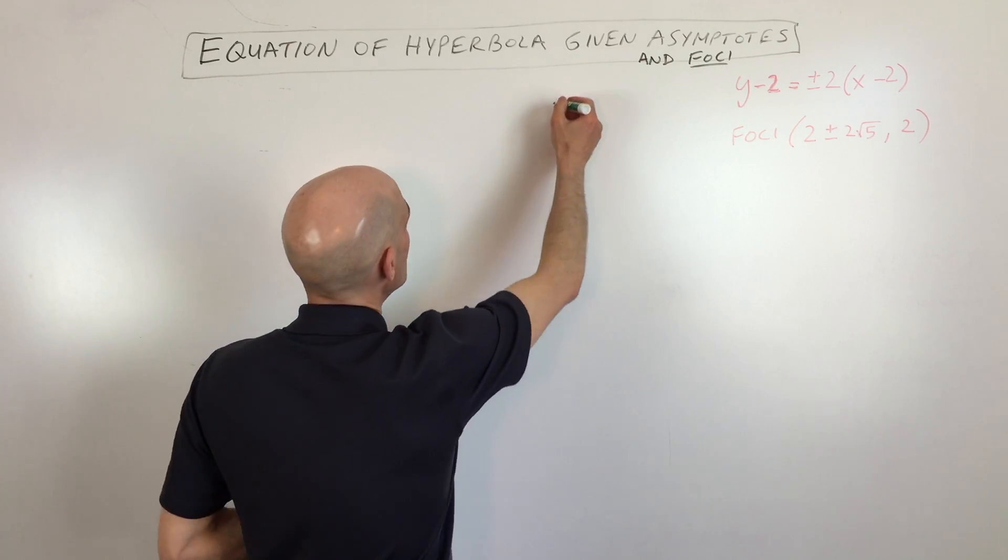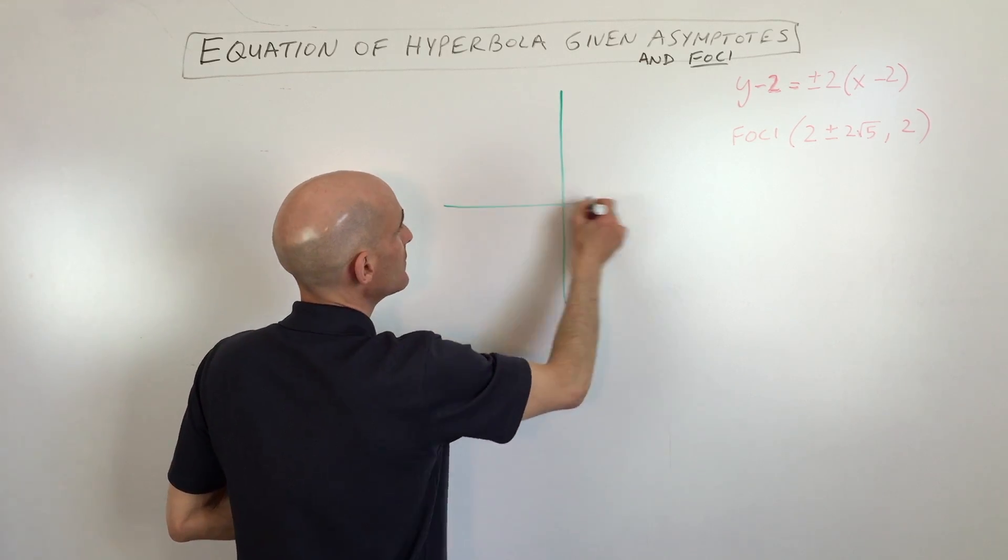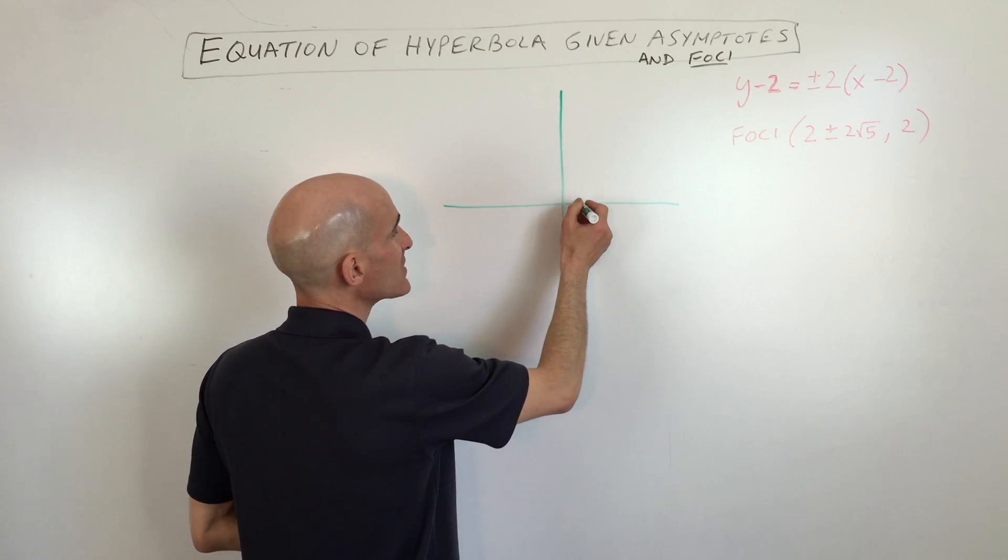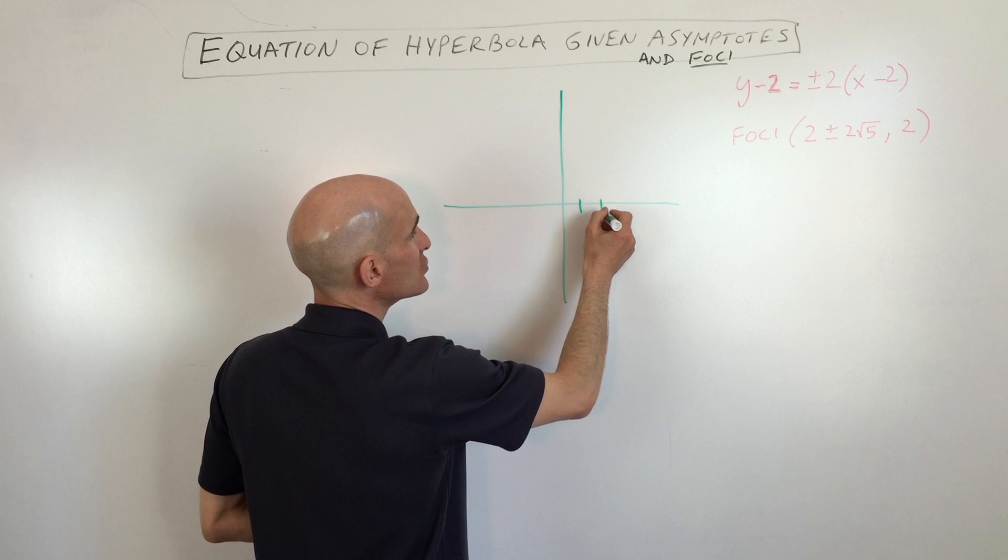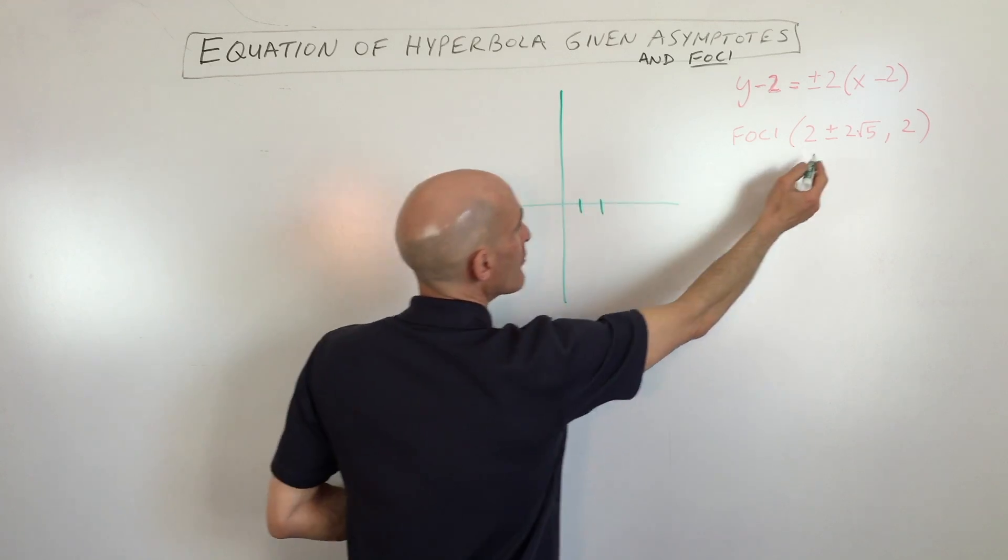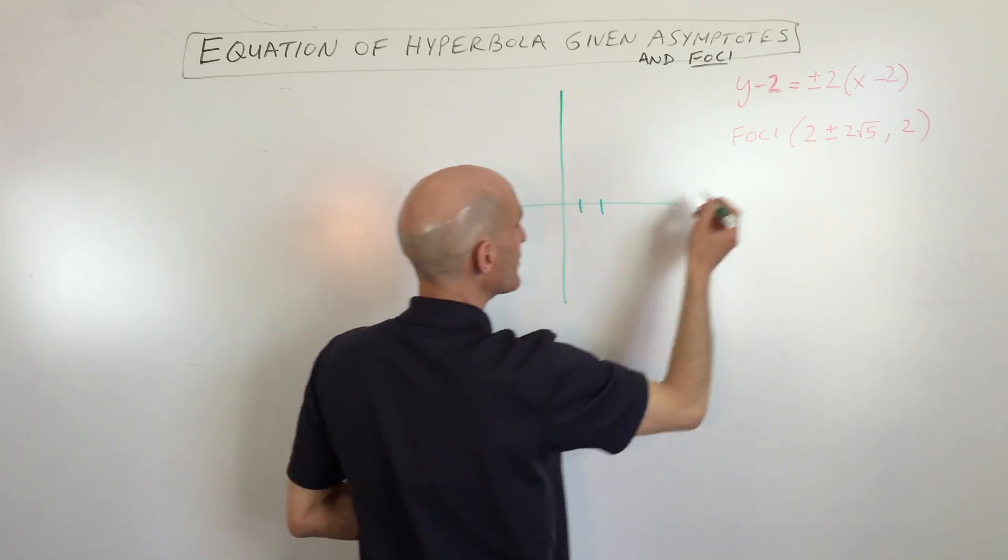So first thing we have is, we've got a coordinate axis, and we know our foci are at 2, plus or minus 2 root 5, comma 2.